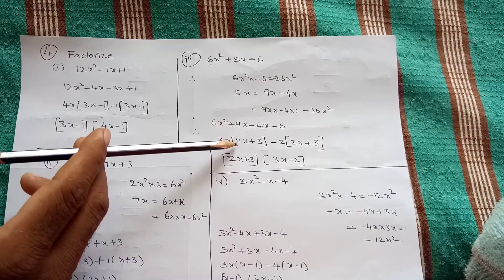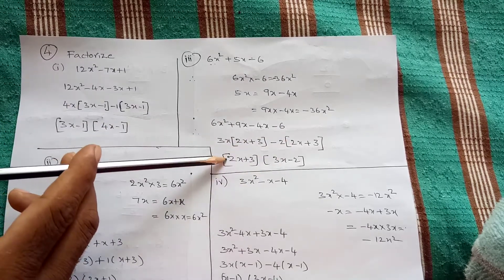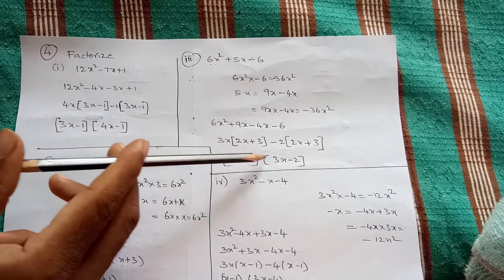If you check these two brackets: 2x plus 3, 2x plus 3. Take 2x plus 3 common and here 3x minus 2 remain.